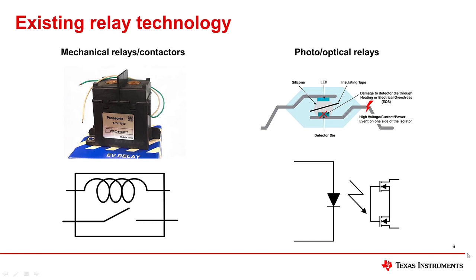There is a barrier of either plastic or air between the signal sender and receiver. Both of these technologies use insulation material with dielectric strength of smaller magnitude compared to TI's isolation technology, requiring large solutions to meet appropriate isolation standards. Electromechanical relays provide low resistance because of the metal-to-metal contact, but are subject to mechanical wear over time. While photorelays have better isolation technology than mechanical relays, they use LEDs that deteriorate over time from photodegradation.